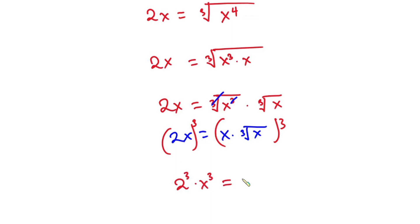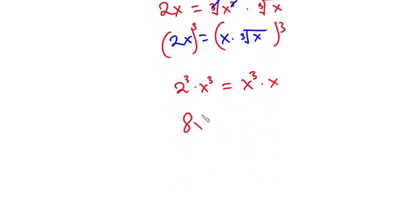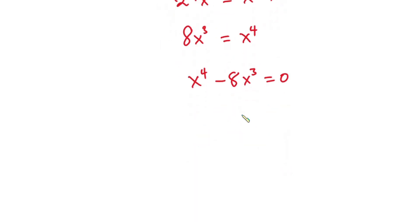Raising each side to the third power: on the left we have 2 cubed times x cubed, and on the right we have x cubed times x. Since 2 cubed is 8, we have 8x cubed equal to x to the fourth power. Moving everything to the right, we get x to the fourth power minus 8x cubed equals zero. We can factor out x cubed, giving us x cubed times (x minus 8) equals zero.